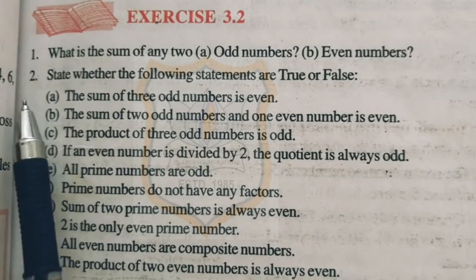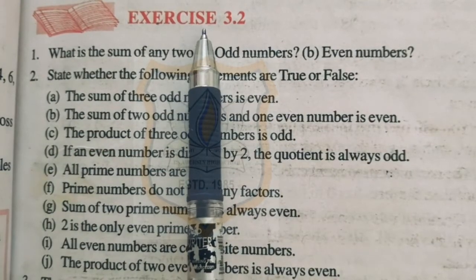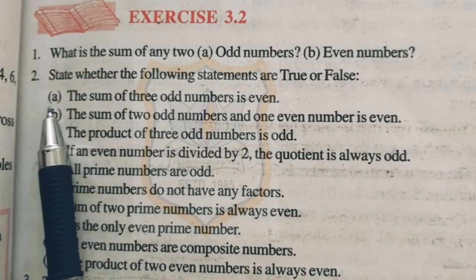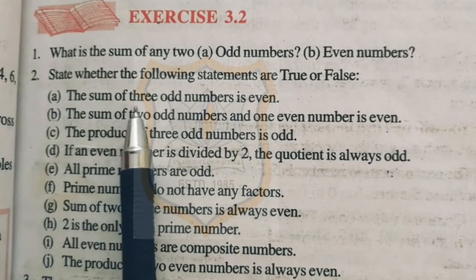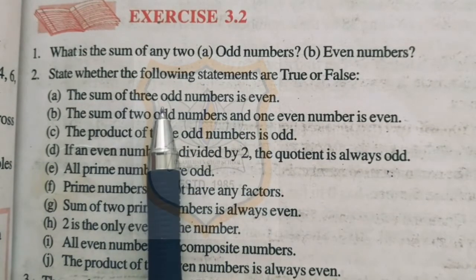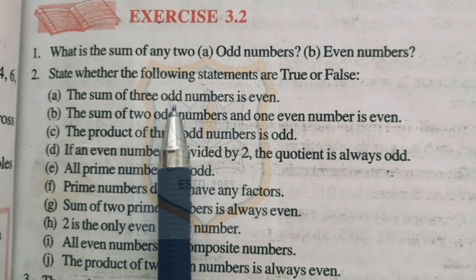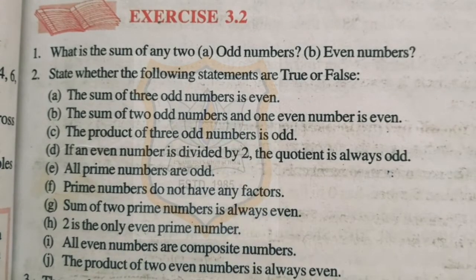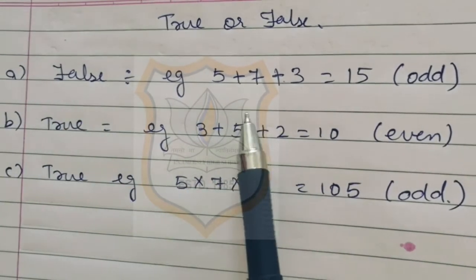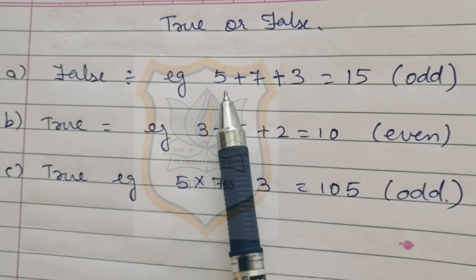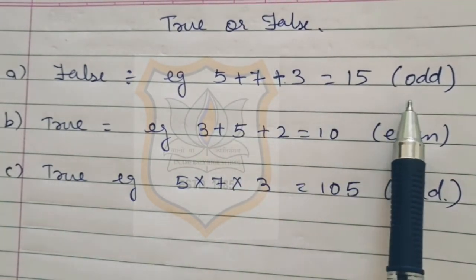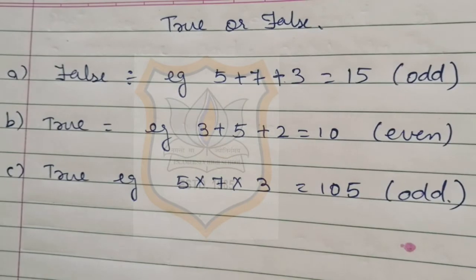Now question number 2 of exercise 3.2: state whether the following statements are true or false. Part A: the sum of three odd numbers is even. We have to find out if adding three odd numbers gives an even answer. The statement is false. For example, 5 plus 7 plus 3 equals 15, which is an odd number. So the statement is false.